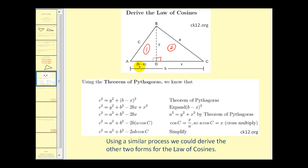Applying the Pythagorean theorem to this small right triangle, we would have C squared equals Y squared plus the quantity B minus X squared.